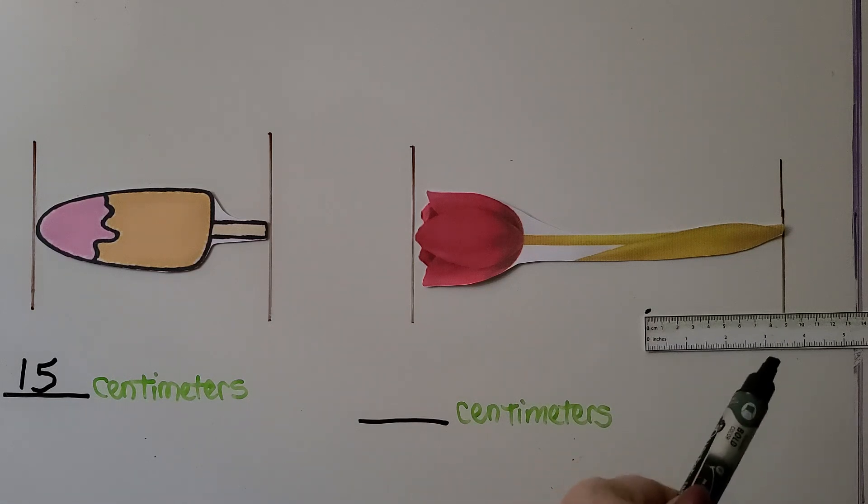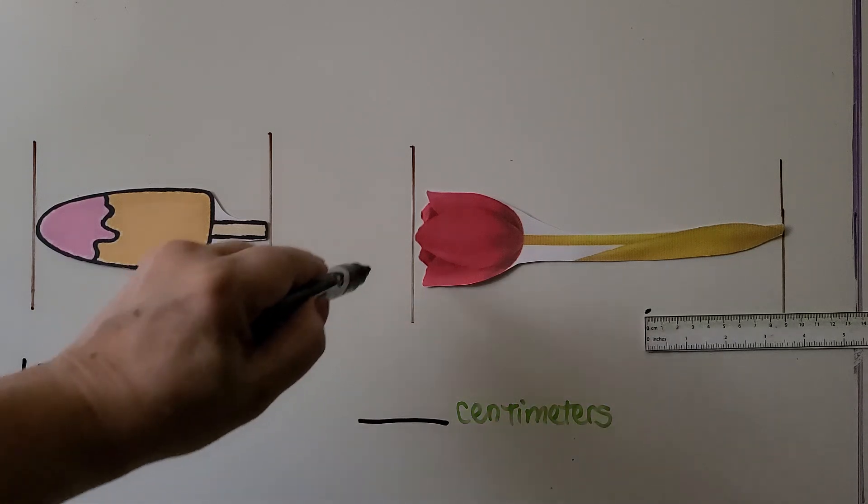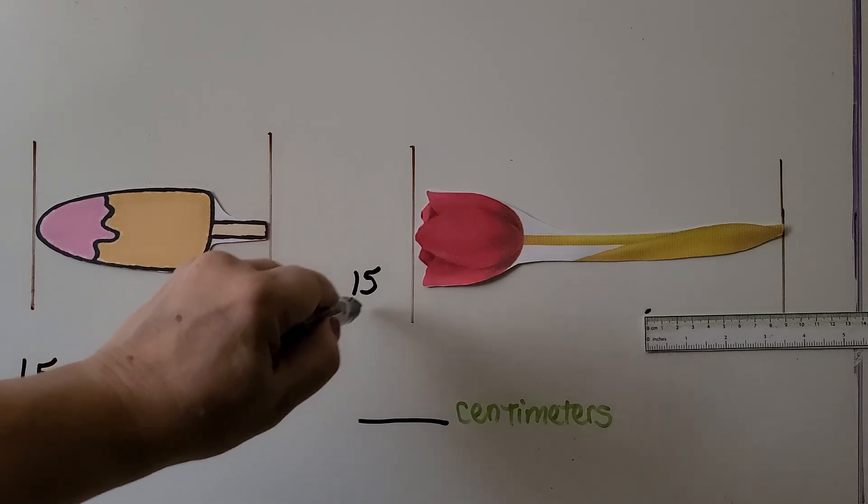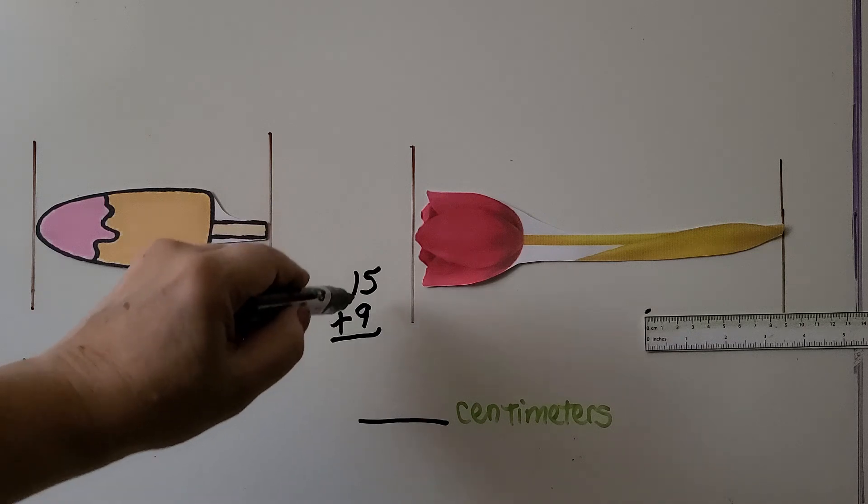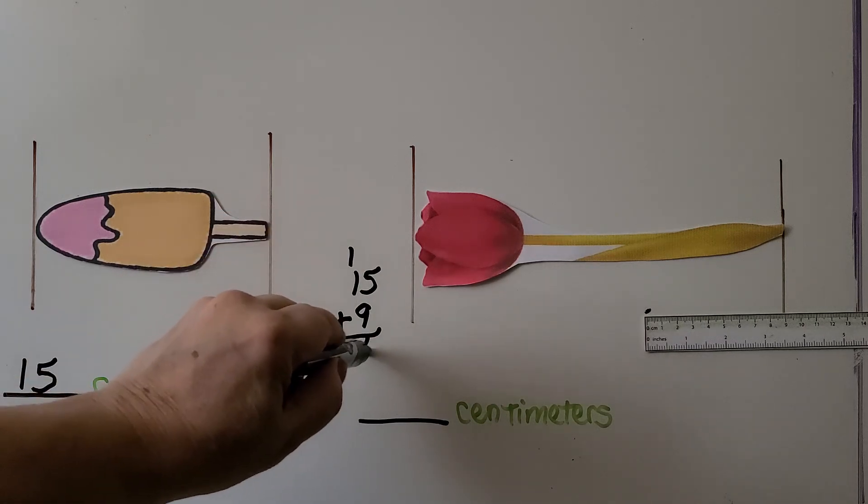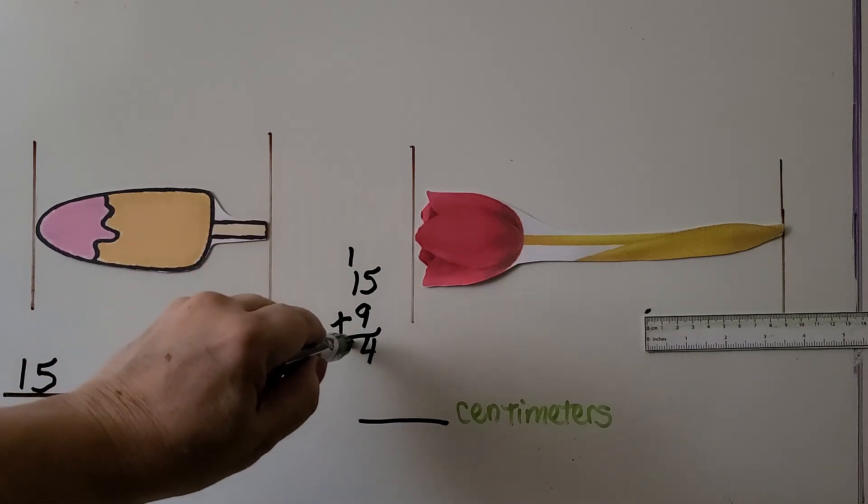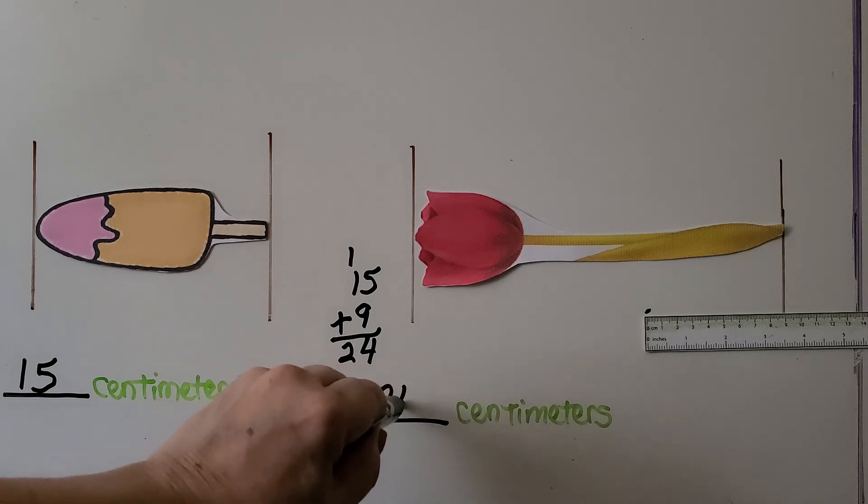And the second time we use the ruler, it's at a 9, so we have 15 plus 9. Nine plus 5 is 14, we regroup the 10 and put the 4 down, we have 2 tens. That would be 24 centimeters.